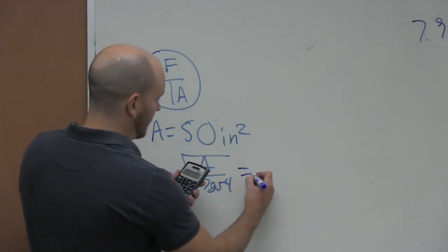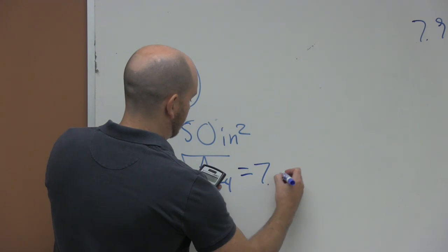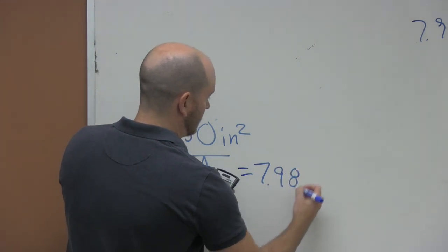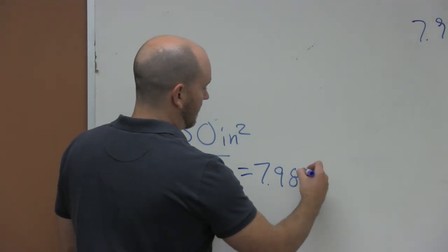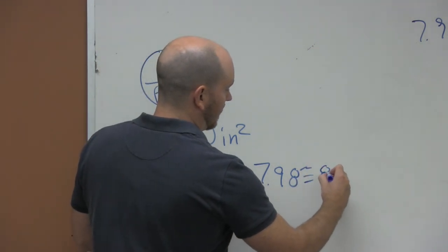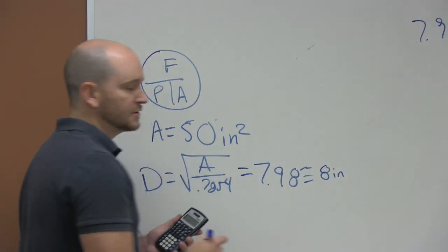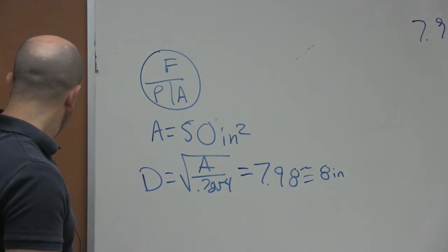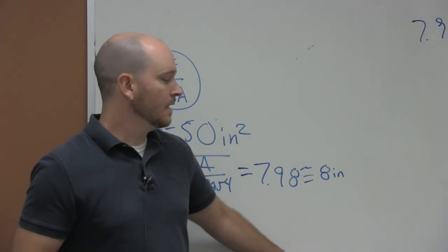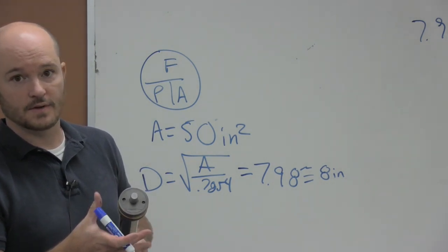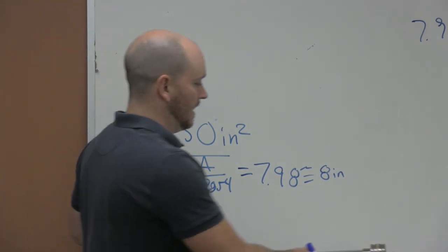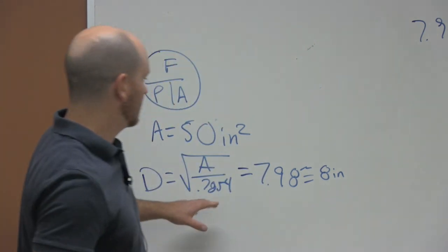And that equals roughly 7.98. So we would just go ahead and round that up to an 8 inch diameter. When you go to order this cylinder or look for the cylinder, you would want to look for a diameter of 8 inches.